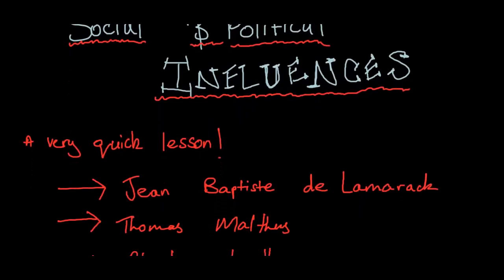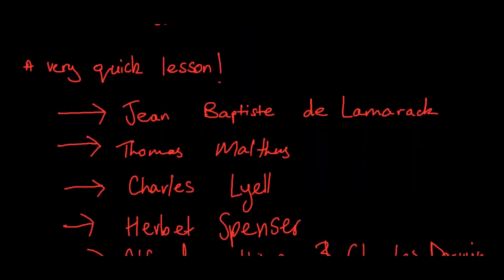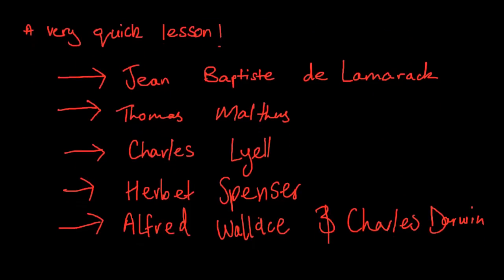This is going to be a relatively quick lesson, and these are the people I'm going to be covering: Jean Baptiste de Lamarck, Thomas Malthus, Charles Lyell, Herbert Spencer, Alfred Wallace, and Charles Darwin. All these names should have some familiarity if you've done the science courses earlier on or perhaps even the preliminary biology unit.